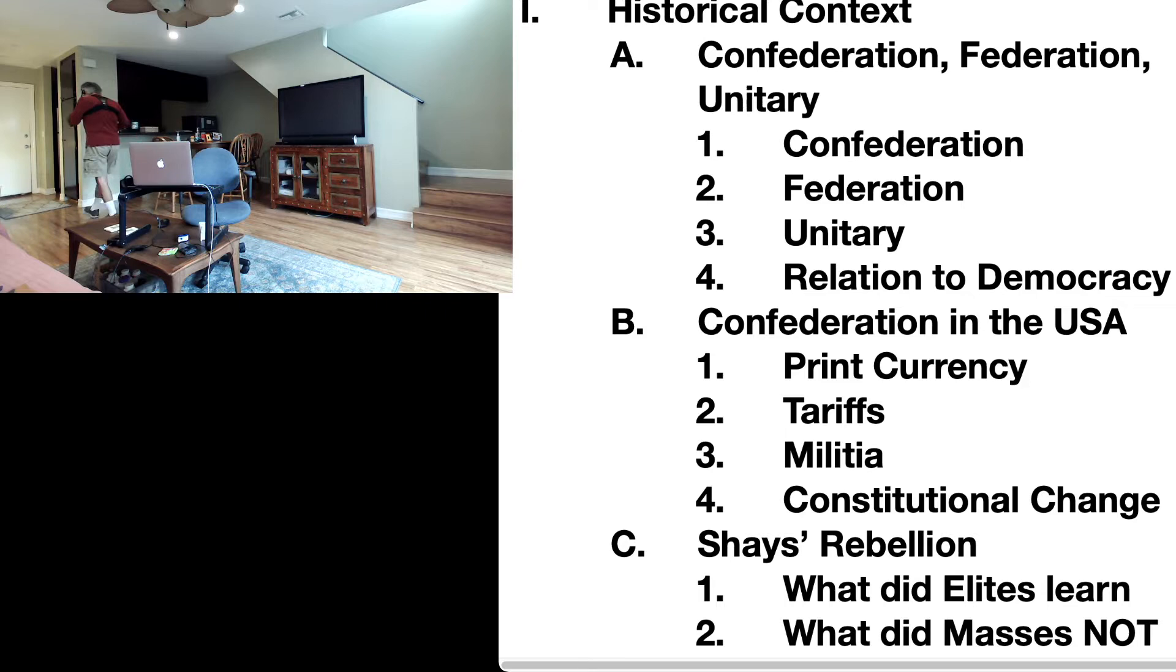Point B: Confederation in the United States. As I said before, from 1774 to 1787, the United States was a confederation of states. It was not a federation of states. So we ask this question: What powers did states have that the federal, or central government to be more accurate, did not have?